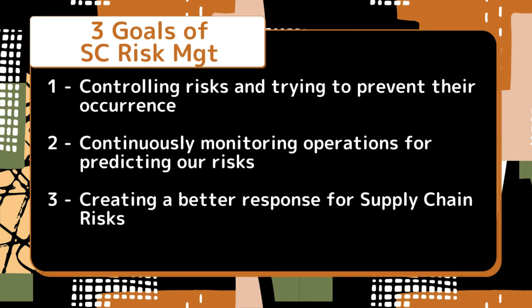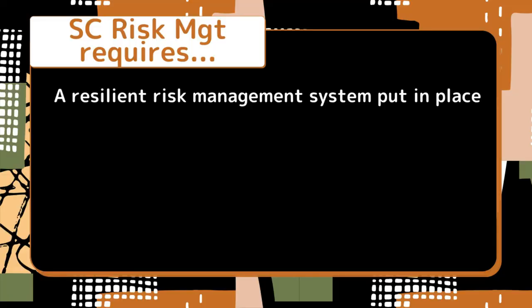1. Controlling risks and trying to prevent their occurrence. 2. Continuously monitoring the operation to predict before the happening of any risk. 3. Creating a better response for supply chain risks. It is imperative to develop and follow a resilient system that must be able to absorb the shocks and attain its normal level as soon as possible.